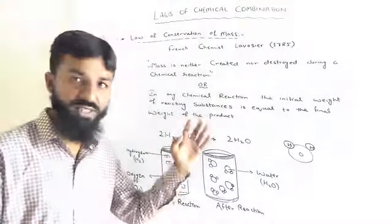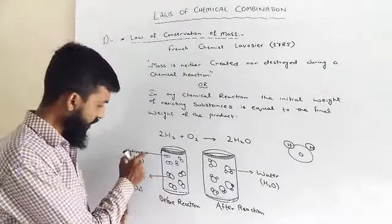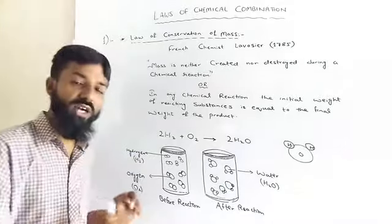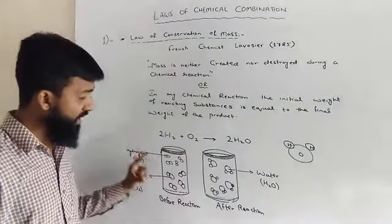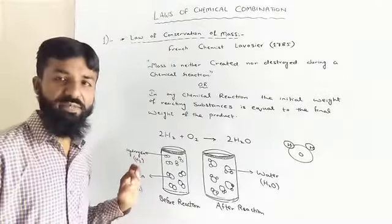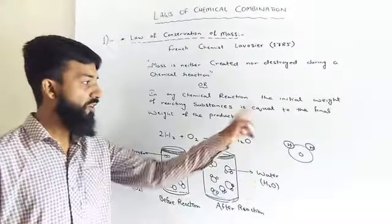In this example, oxygen and hydrogen are two reacting substances. The mass of these two substances will be equal to the mass of water, which is the final product formed by the combination of hydrogen and oxygen.